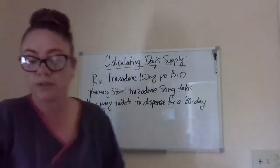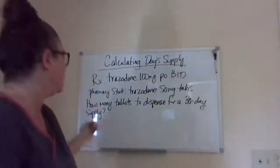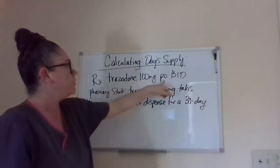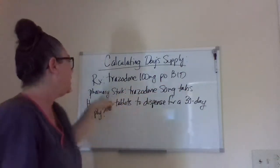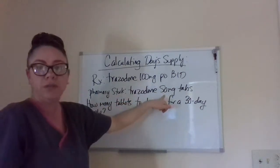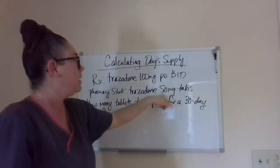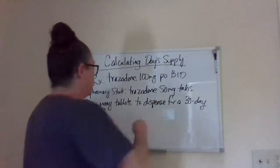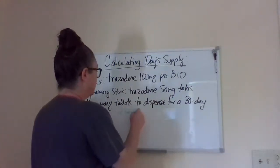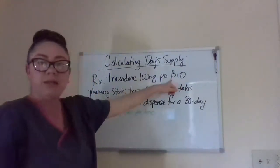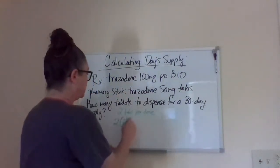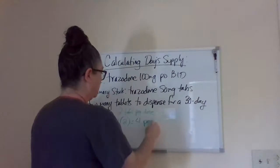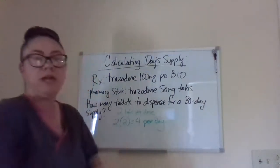This is where some of the trickiness comes into play. Again, RX is what's been ordered: Trazodone 100 milligrams PO BID — by mouth twice a day. In pharmacy stock, I only have 50 milligram tablets. So what does that mean for the patient? They're going to have to take two tablets to get a 100 milligram dose — two tabs per dose — and they're taking it twice a day, so two times two is a total of four tablets per day.